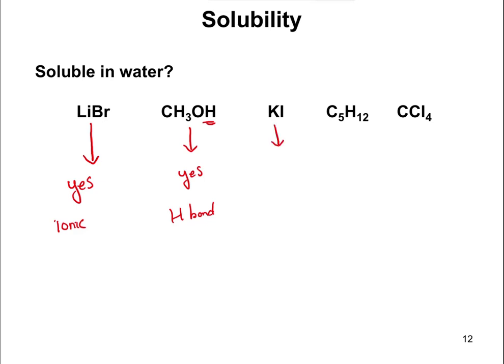Next is KI, or potassium iodide. Potassium iodide is going to be soluble because it's an ionic compound — potassium is a metal, iodine is a nonmetal, so the ionic compound potassium iodide would be soluble. C5H12, which is pentane, is going to be a no, because it's nonpolar — there are only carbons and hydrogens, so it's going to be non-soluble in water. And CCl4 is also no, because it's nonpolar. The carbon-chlorine bond is polar, but the overall molecule is not polar because those bonds pull in equal and opposite directions.